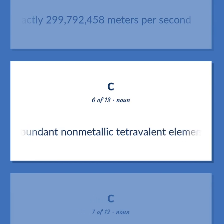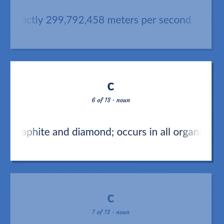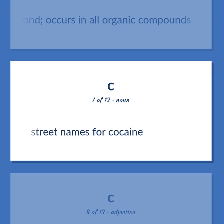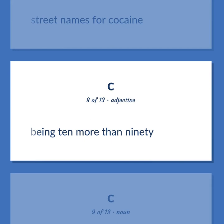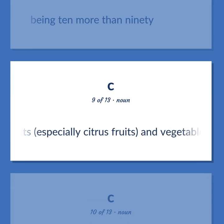An abundant non-metallic tetravalent element occurring in three allotropic forms: amorphous carbon, graphite, and diamond; occurs in all organic compounds. Street names for cocaine. Being 10 more than 90. A vitamin found in fresh fruits, especially citrus fruits, and vegetables; prevents scurvy.